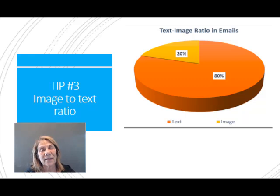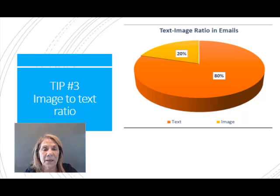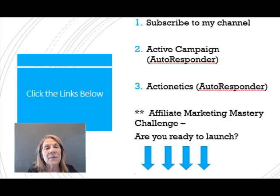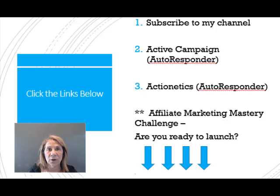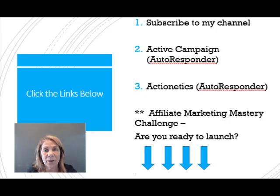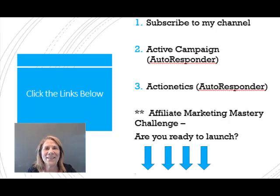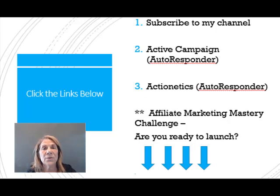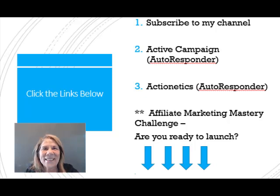So if you're doing those three things correctly, then you don't have to worry about spam. If any of those are things you need to tweak, go back and do that. Give me a thumbs up if this was helpful. I have a couple of links below — my two favorite autoresponders, ActiveCampaign and Actionetics, both have free trial periods, so check them out and see which one you like better. There's also an affiliate marketing mastery challenge below, and don't forget the playlist of more email marketing videos I've made.